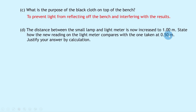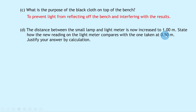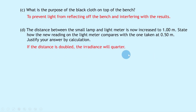Part d says: the distance between the small lamp and light meter is now increased to 1.00 meters. State how the new reading compares with the one taken at 0.50 meters and justify by calculation. The distance is doubled from 0.5 to 1.00 meters. The inverse square law tells us that as distance is doubled, irradiance will quarter.